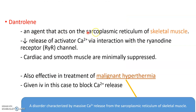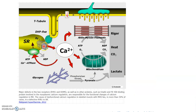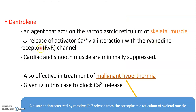Dantrolene reduces the release of activator calcium via interaction with the ryanodine receptor channel. By reducing calcium release, we reduce contraction, spasm, and pain — since more calcium leads to more contraction and more pain.